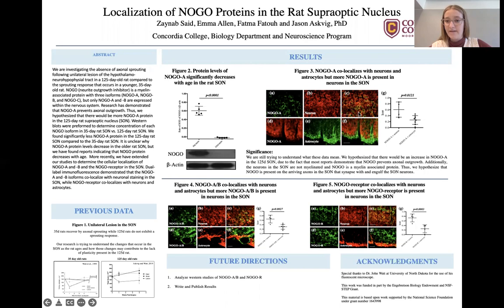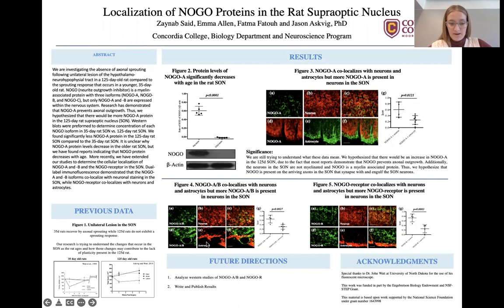We're able to quantify that and find that there is significantly more nogo A in the neuron rather than the astrocyte. We did the same thing with nogo AB and found the same thing — that it's significantly more in the neuron — and then the same thing with nogo R.